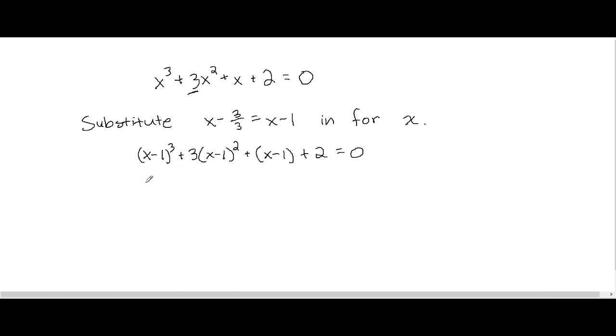So multiplying out x minus 1 to the third is like x minus 1 times x squared minus 2x plus 1 plus 3 times x squared minus 2x plus 1. And then there's nothing to distribute for the x minus 1, so I can just drop the parentheses there.